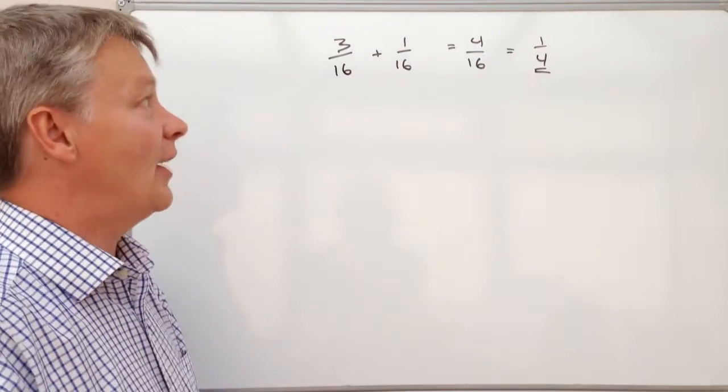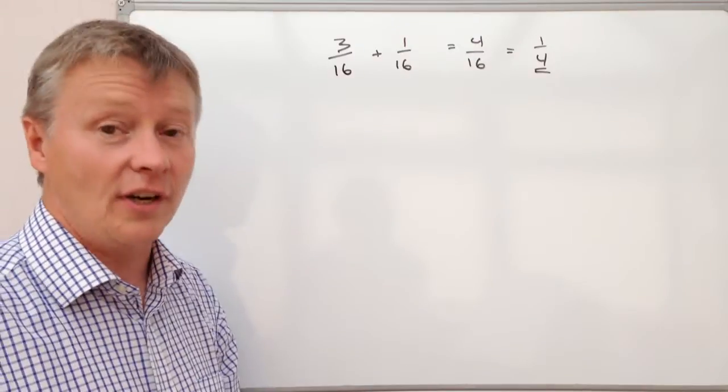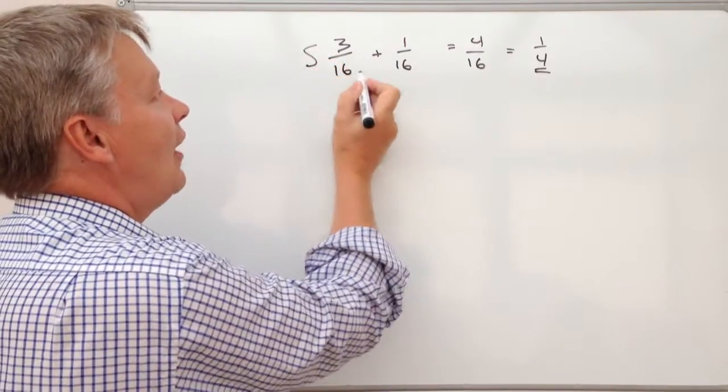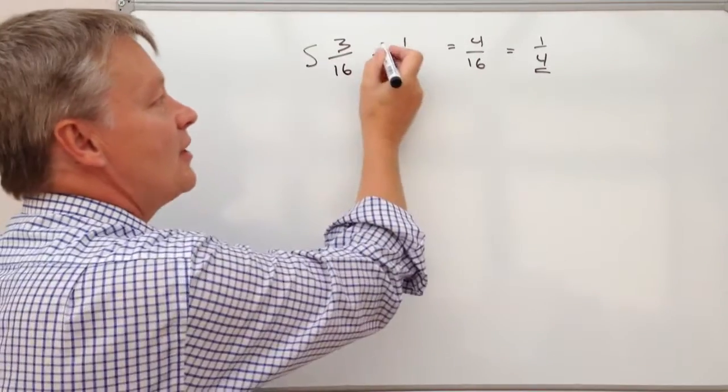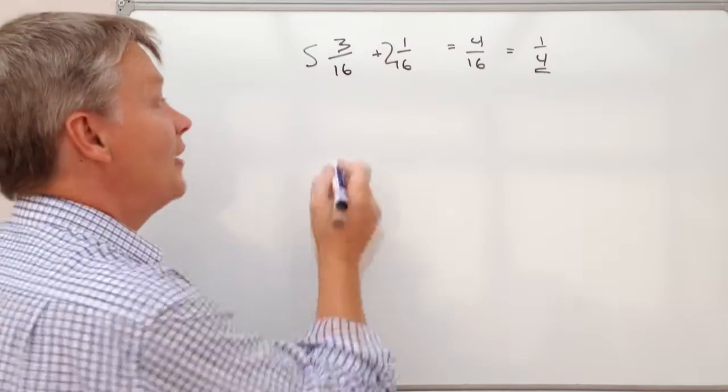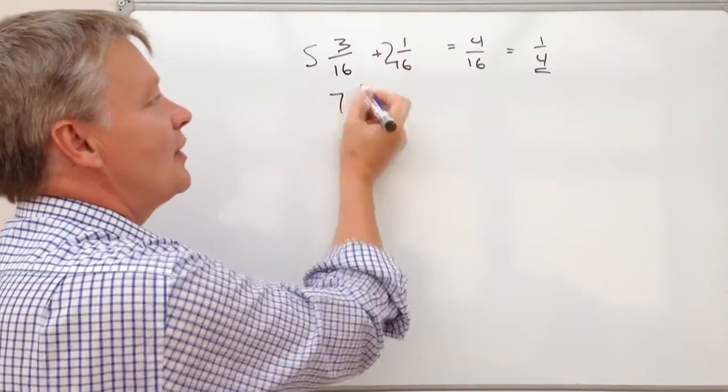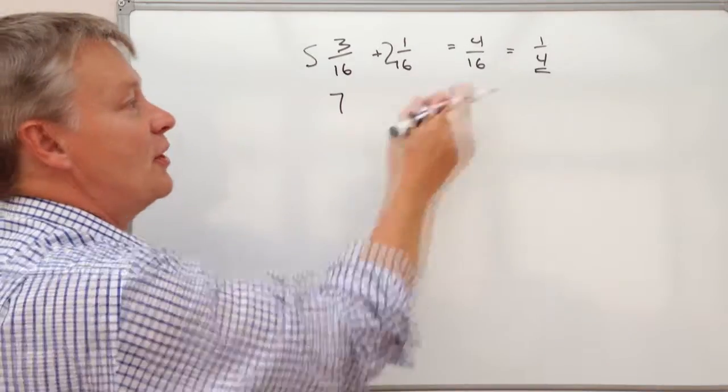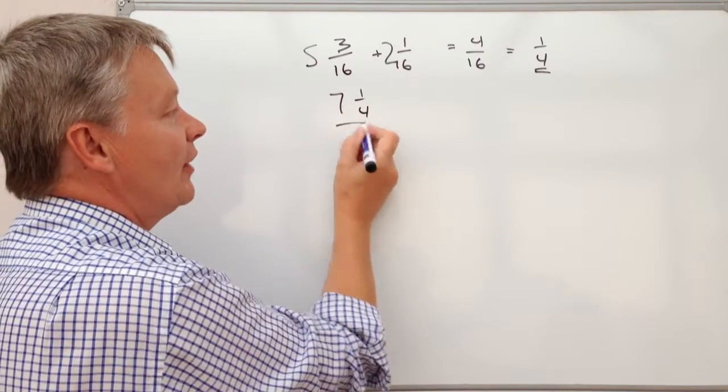Now let's say that the question you're presented with also has numbers in it. So it might be something like 5 and 3/16 plus 2 and 1/16. Well all you do with that, you add the two numbers together and you get 7. And then 3/16 plus 1/16 is 4/16. Reduce it, so that would become 7 and 1/4.